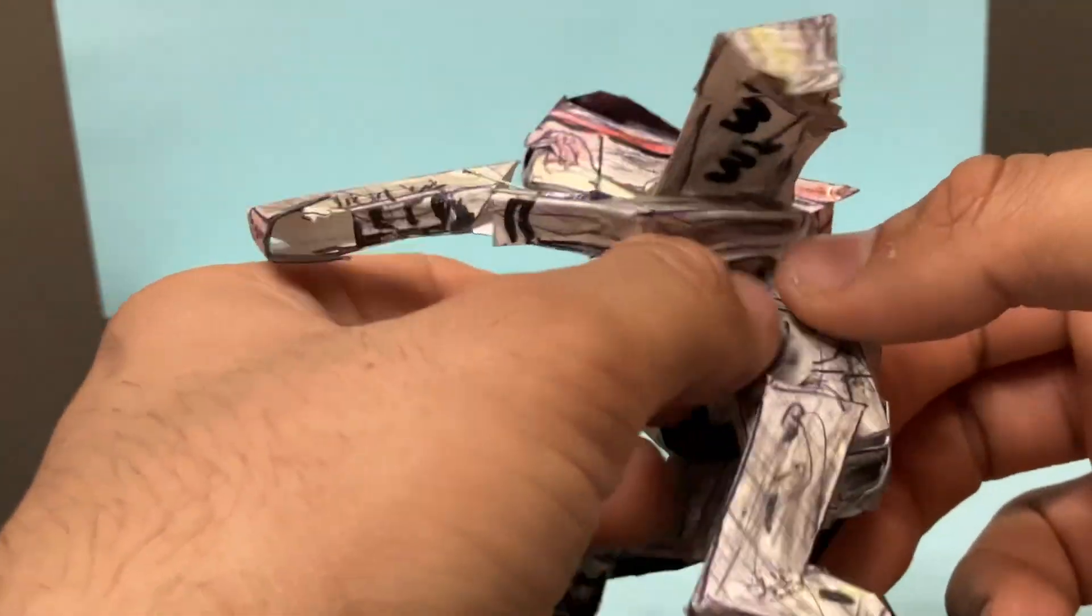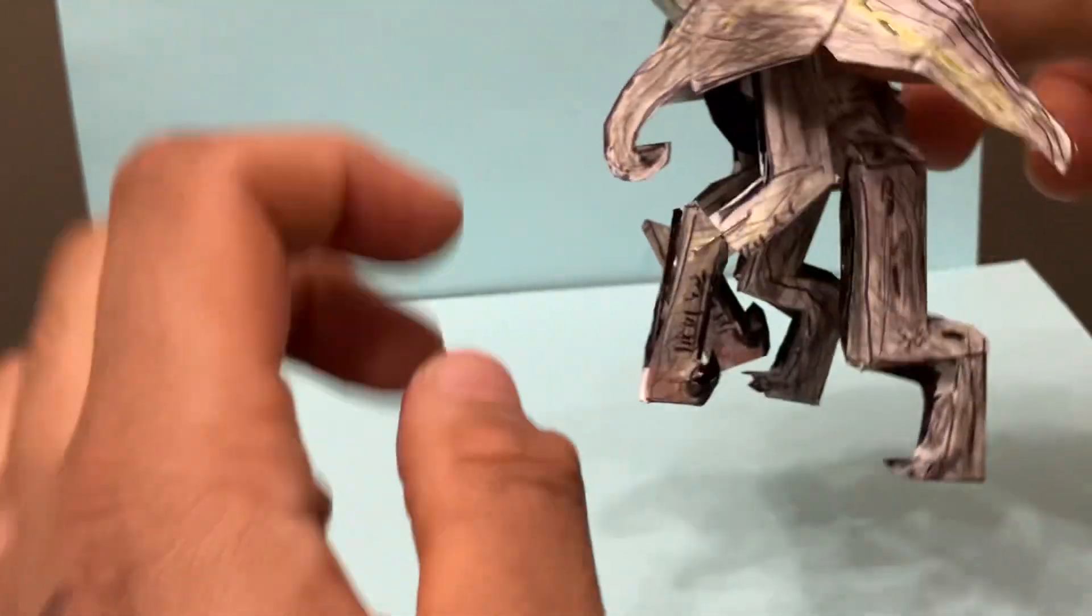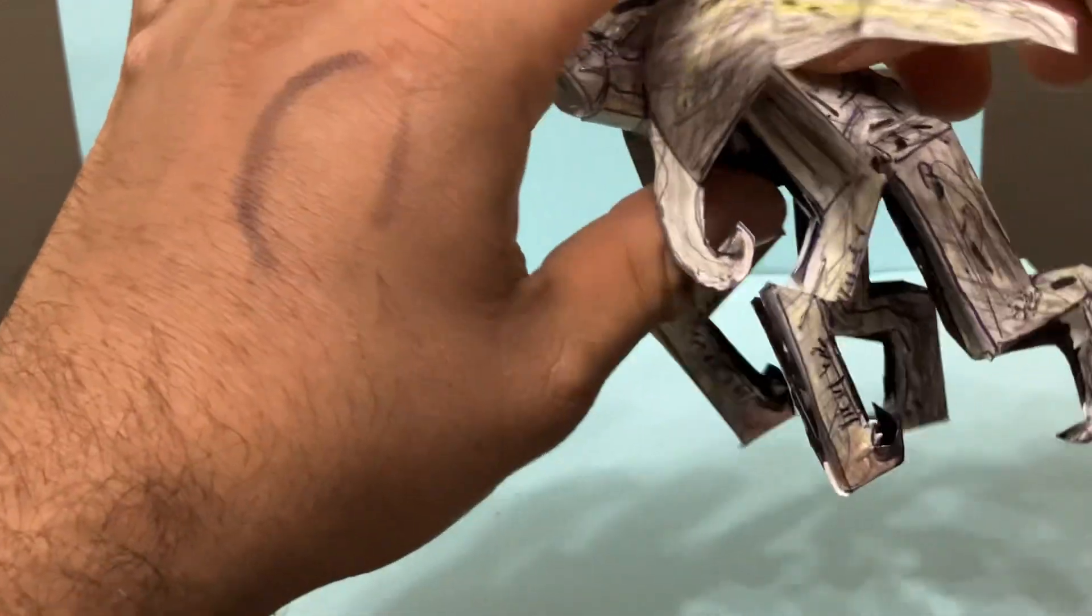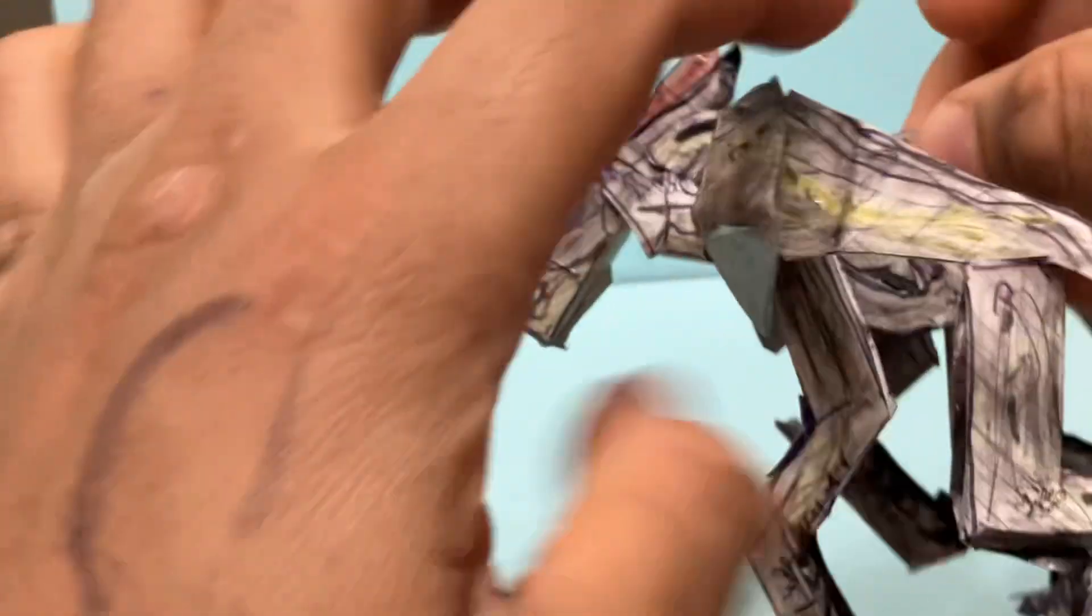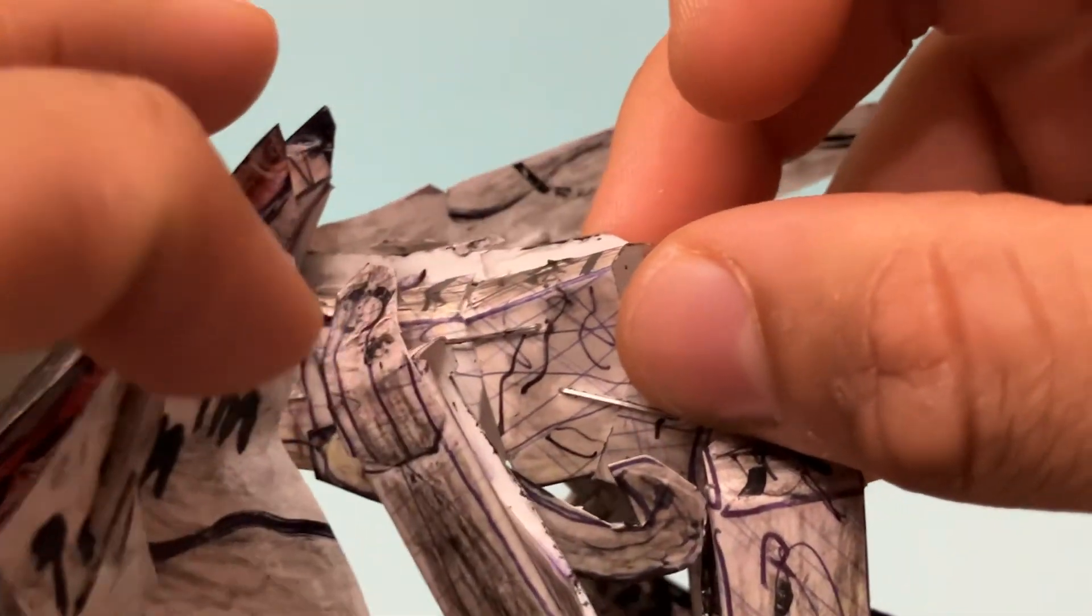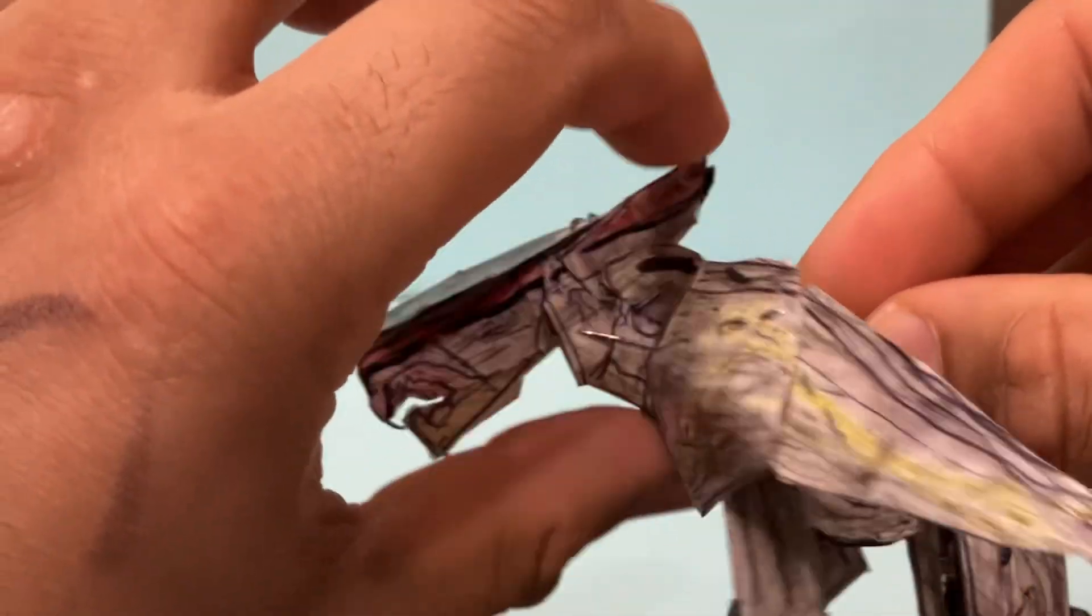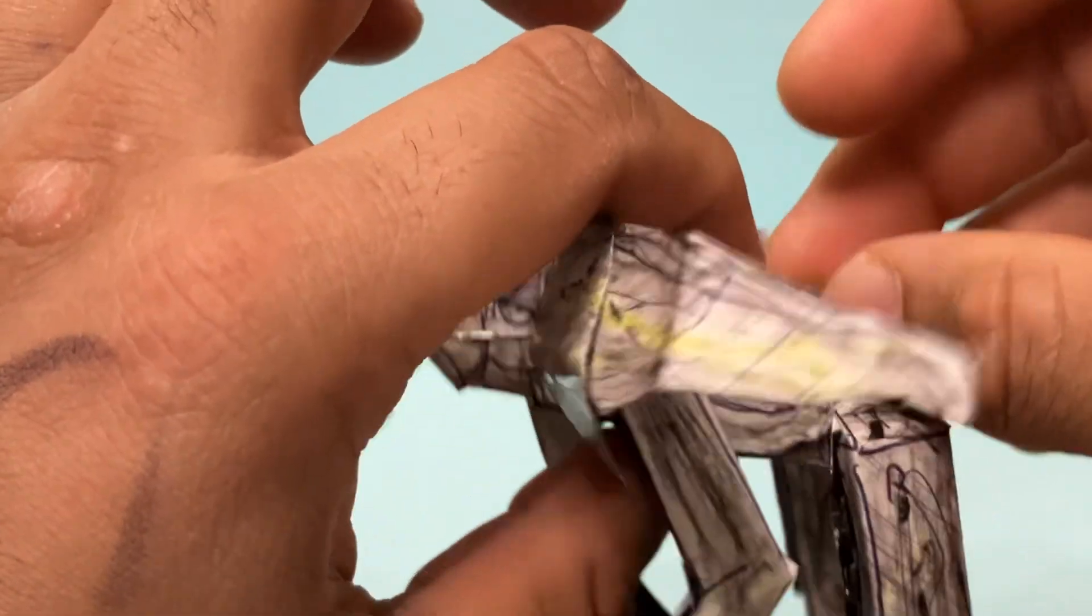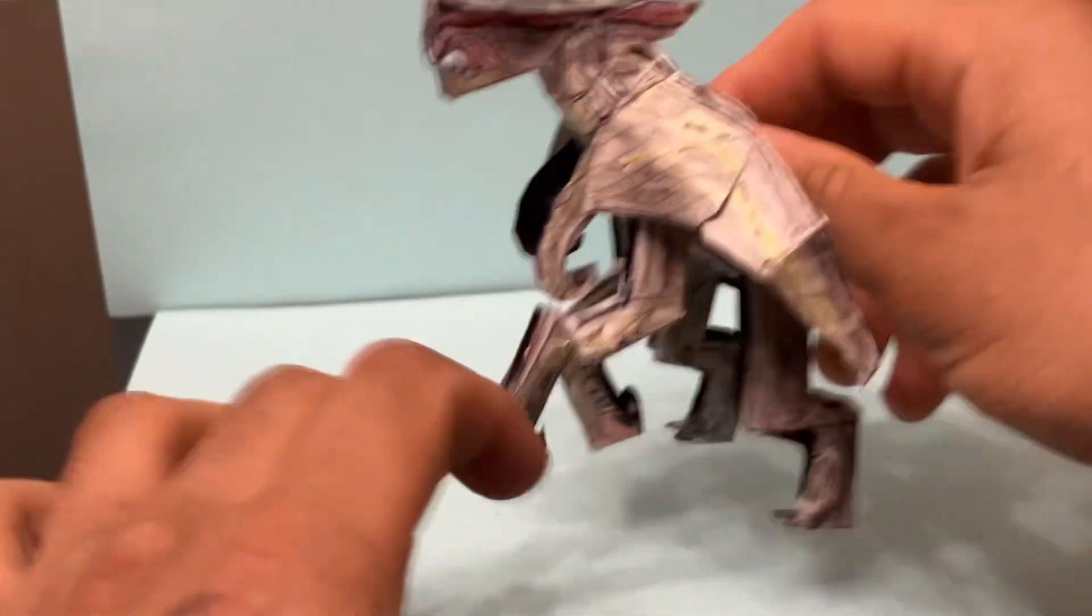Those smaller arms have a joint right there where my thumb is so you can pose that. The legs you can move forward and back. The body has a cut here and a cut here so you can actually pose the body. This half will swivel a little bit, this will swivel up and down, but because of just the design and all the wing parts that are in the way it's kind of hindered, but you can pose that.